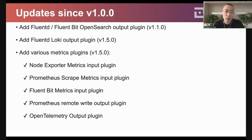For example, the node exporter metrics, the Prometheus script metrics, the Flimbit metrics, and the Prometheus remote write plugin together with the OpenTelemetry plugin.